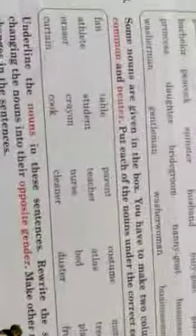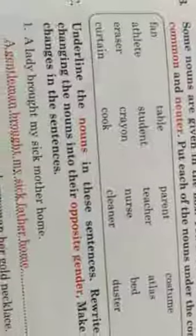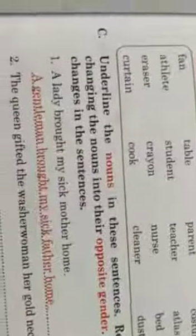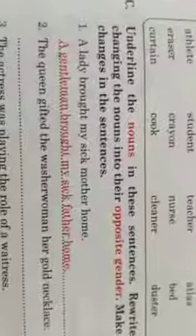So let's take a quick recap. There are four genders: masculine, feminine, common, and neuter. There are a few exercises which I have already sent you — please do them in your English grammar book. I hope you have understood. Thank you.